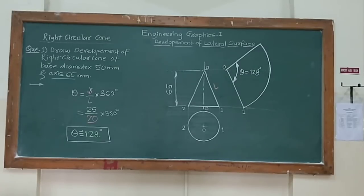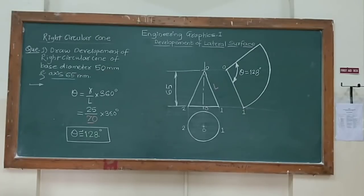So theta is R by L into 360. Whereas this R is equals to radius of this base which is 25 mm as diameter is 50. And 65 mm is axis height.